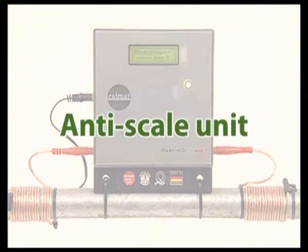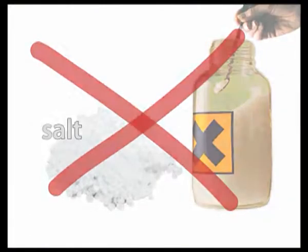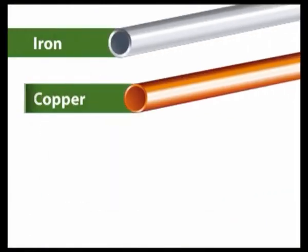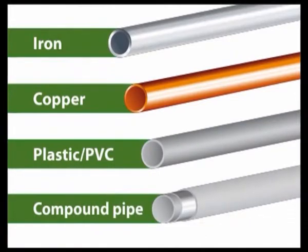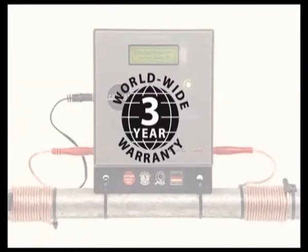CalMAT is your eco-friendly anti-scale device. It does not need chemicals or salt. CalMAT works with all pipe materials. It does not need any maintenance and comes with an international warranty of three years.